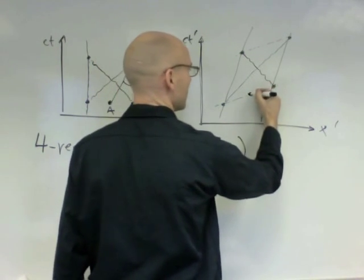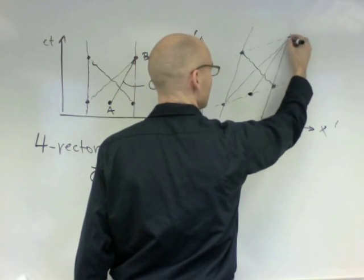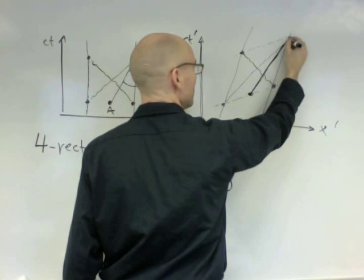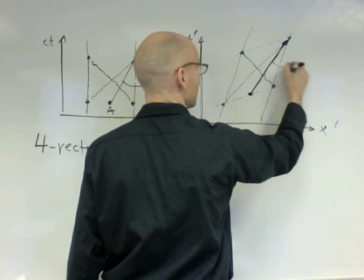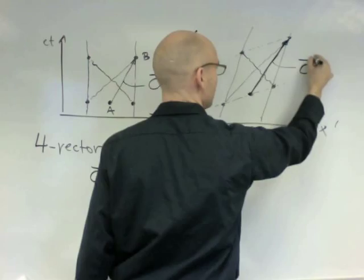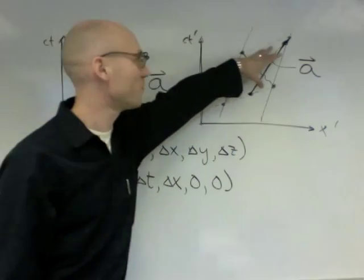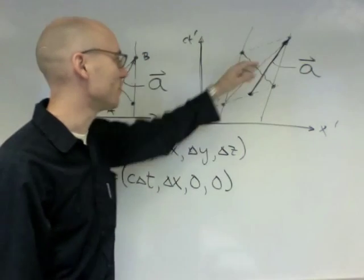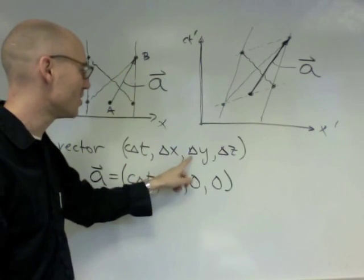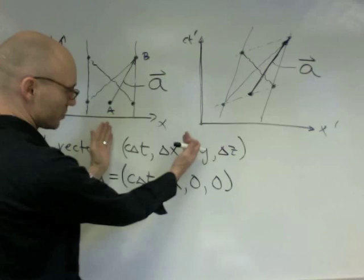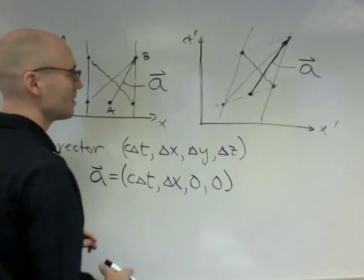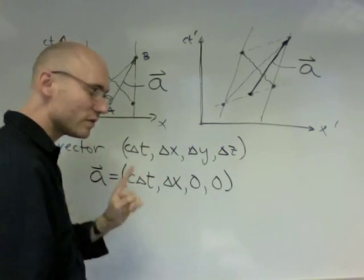In the new frame, the vector a is going to look like this, here, that vector is a. When we Lorentz transform this four vector from one to another, what we're doing is we're transforming these coordinates according to Lorentz transformation. Of course, we've only really thought about those two coordinates.